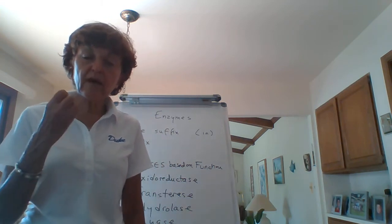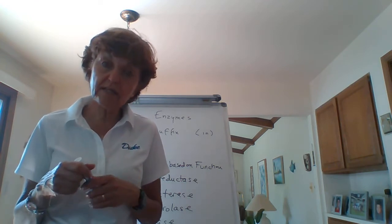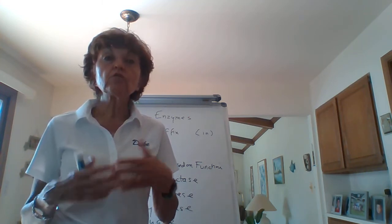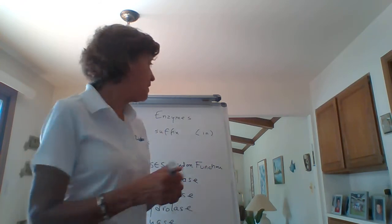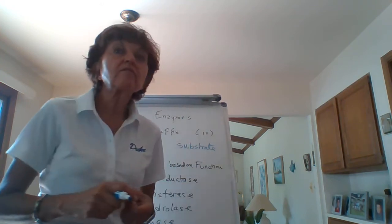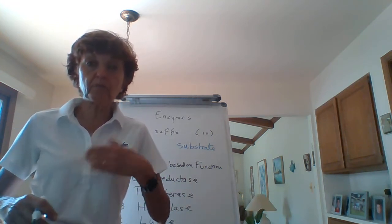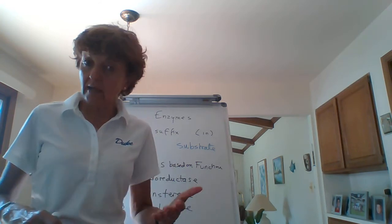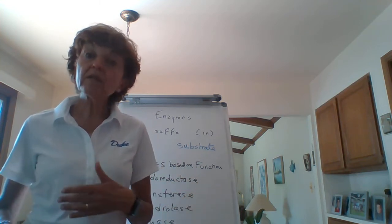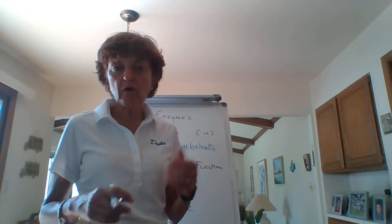Some enzymes have a prefix that tells you what substrate it's going to be working on. The word substrate is used in enzyme chemistry instead of the word reactant. So anytime you have an enzyme catalyzed reaction, you don't call it a reactant anymore. You call it a substrate. For example, sucrase works on sucrose. Amylase works on amylose. Lipase works on lipids.